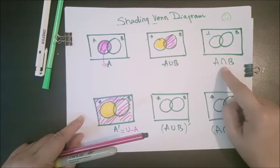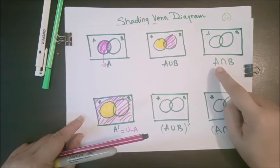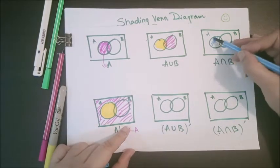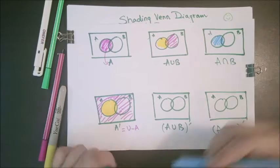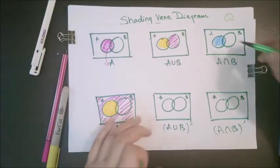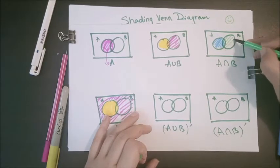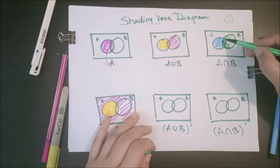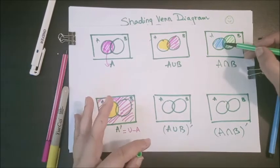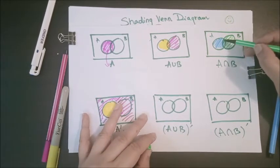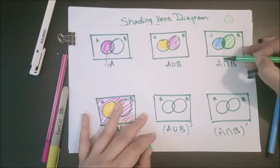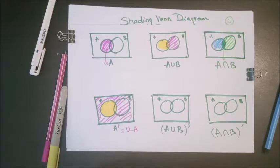Next is A intersection B. I am shading set A with blue color and set B with green. As I said, intersection is the portion where two sets share their common elements. Only this part where you can see both blue lines and green lines is the common area, which represents A intersection B.